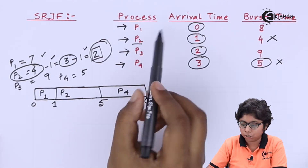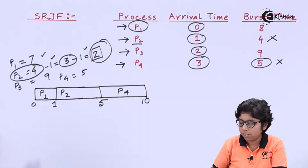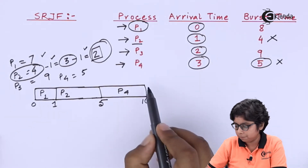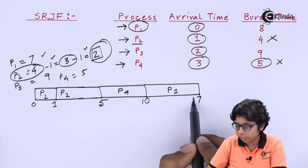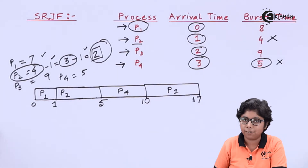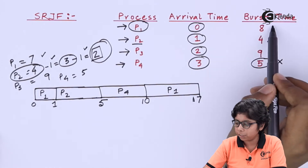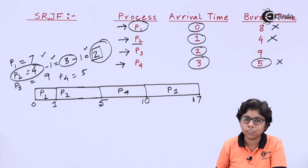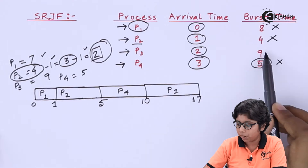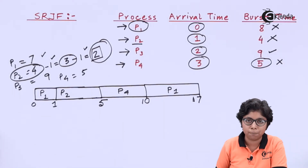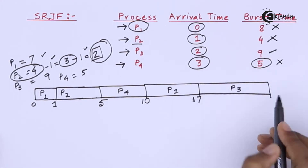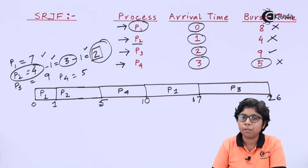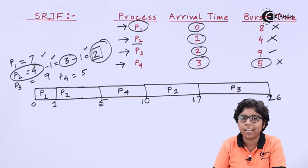P1 is shorter at 7ms, so memory is allocated to P1, which has been waiting since 10ms. P1 completes its execution at 10 plus 7, which is 17ms. Finally, P3 is the last process to operate, running for 9ms, and completes at 26ms. The entire CPU scheduling is done.